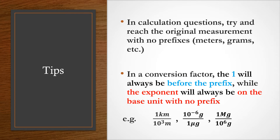The exponent will be on the base unit with no prefix. For example, there are three examples shown — each conversion factor has the exponent on the meters, grams, and grams, which are the ones with no prefix, while the one is always before the prefixed units: kilometer, microgram, and megagram.